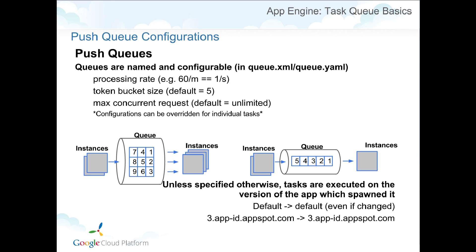Unless you specify otherwise, every single task you put on the queue is going to be executed by the same version that initiated that task. If you're the default application, it will go on that queue and try to execute that URL on the default version. If you're in version 3 and execute a task, it goes back to version 3. You can override this behavior. This is nice because if you deploy a new version and put something on the task queue, even though tasks are shared, it goes back to the same version you deployed, so you can test new functionality without worrying about cross-version calls.